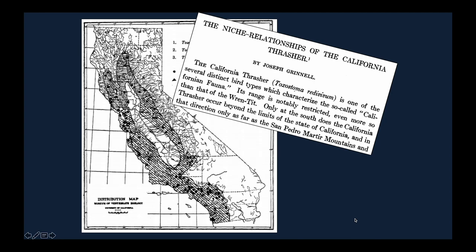Grinnell was based at Berkeley at the Museum of Vertebrate Zoology, which he helped to found. Grinnell got very interested in the biota of California and essentially started exploring the limits of species distributions. A century ago he published a paper called 'The Niche Relationships of the California Thrasher,' and you can see the map he published with black dots showing known occurrences and a hashed area showing an approximate range for the species.